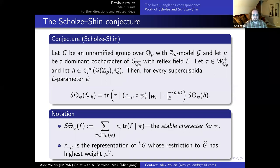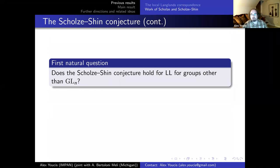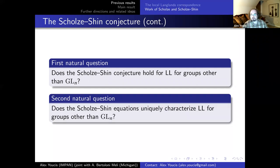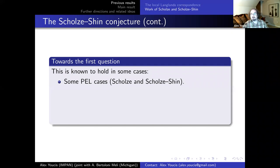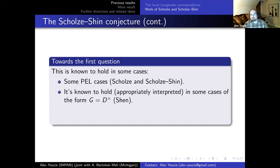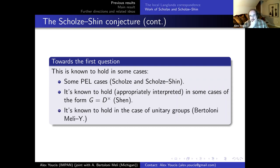Once you have this conjecture, there are two natural questions. First, does the Scholze-Shin conjecture hold for other groups beyond GL_N? Second, if it does hold, does it actually uniquely characterize the correspondence? In some PEL cases of EL-type plus ε, it's known to hold by work of Scholze and Scholze-Shin. Appropriately interpreted, Shen shows it holds for G = D^×. In work of Bertoloni Meli and myself, it holds for unramified unitary groups. So the conjecture is known in some cases beyond GL_N.